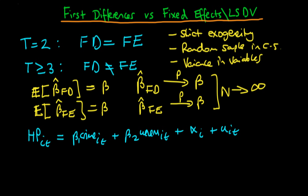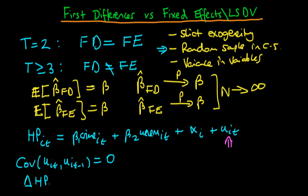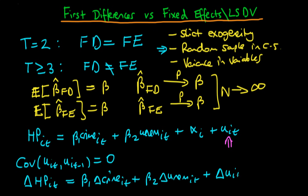If we assume that the idiosyncratic errors are serially uncorrelated — meaning uncorrelated across time, since we don't worry about correlation across cities given our random sample assumption — then we can write that the covariance of u_it with u_i,t-1 equals zero. When we write down our first-differenced system, the first difference of house prices equals beta 1 times the first difference in crime rate plus beta 2 times the first difference in unemployment rate, and by taking the first difference we've removed the unobserved heterogeneity, leaving just the first difference of the error term. For first differences estimation to be efficient, we require that this first-differenced error is serially uncorrelated.